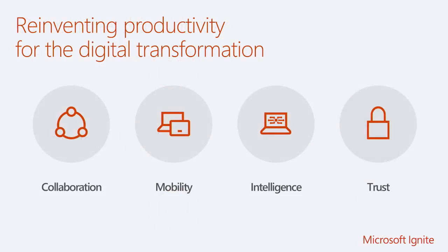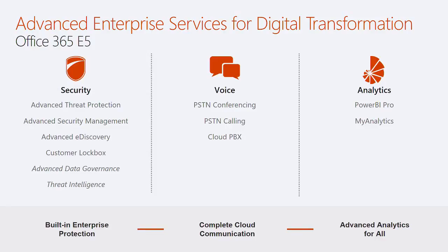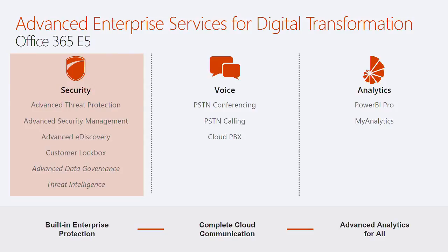When we talk about reinventing productivity, we're talking about digital transformation. It's no longer about what capabilities we have in the product - what can Excel or Word do. We're really looking at how we expose ideas of collaboration, mobility, and intelligence in products with an underlying level of trust. These advanced capabilities fall under the E5 SKU. E5 became available December 1st, 2015, which is why advanced threat protection, advanced security management, advanced e-discovery, and customer lockbox have been out over a year. Advanced data governance and threat intelligence are recently announced capabilities that have gone into private preview and will be available in the next couple of months.